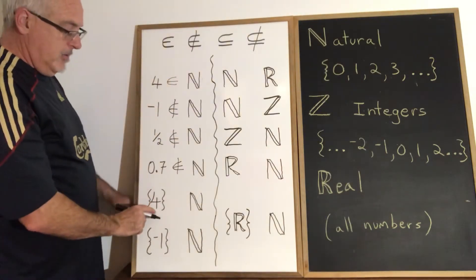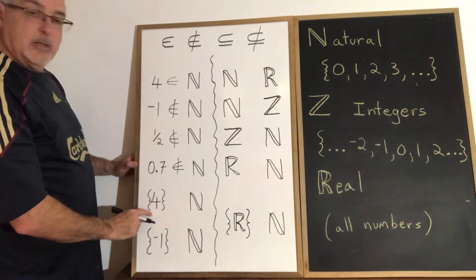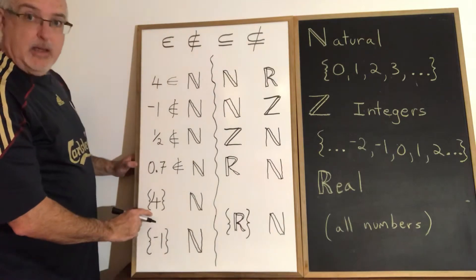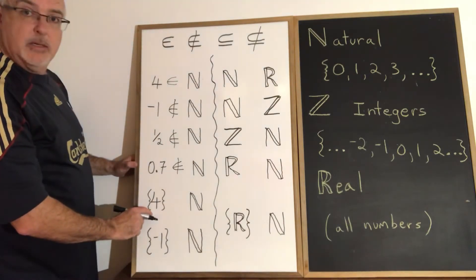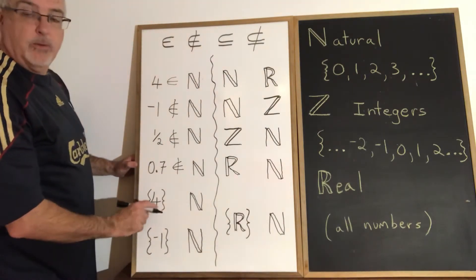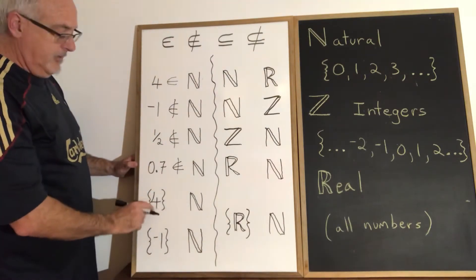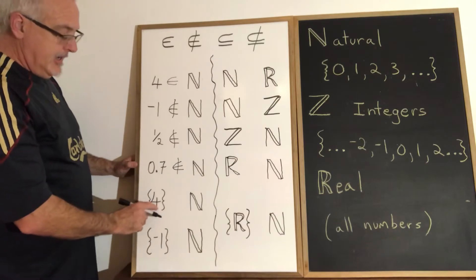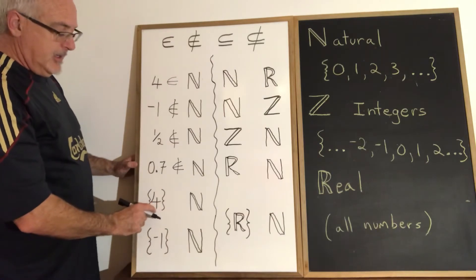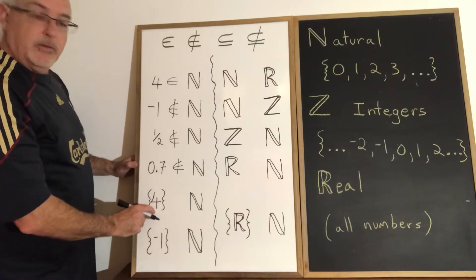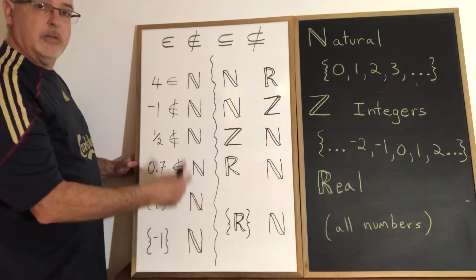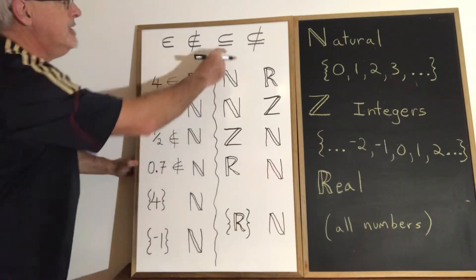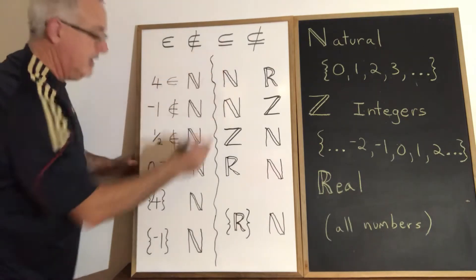Now we have the set that has only one element, which is four. Four is an element of this set. Is the set that includes four a subset of natural numbers? Yes, it is — I'm using the subset symbol.